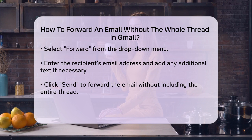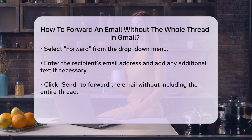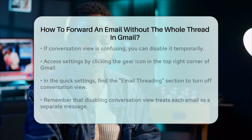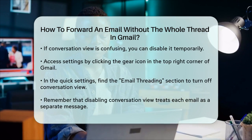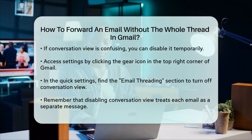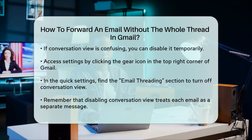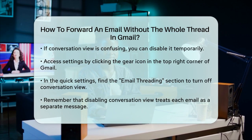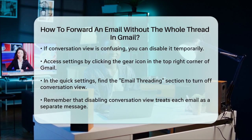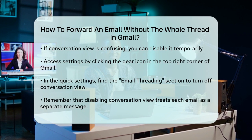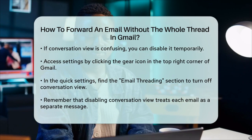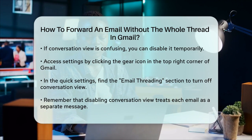If you find that the conversation view is causing more confusion, you can temporarily disable it. To do this, go to the Settings button — the gear icon — in the top right corner of your Gmail inbox. In the quick settings, scroll down to the Email threading section and turn off the conversation view. However, keep in mind that turning off conversation view will treat each email in the thread as a separate message, which might not be ideal for all your needs.